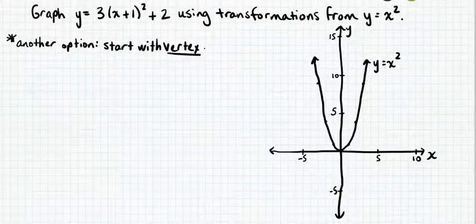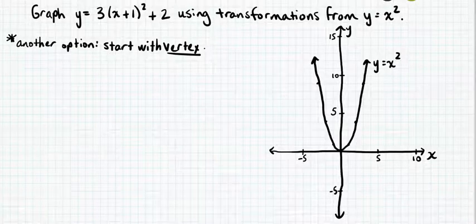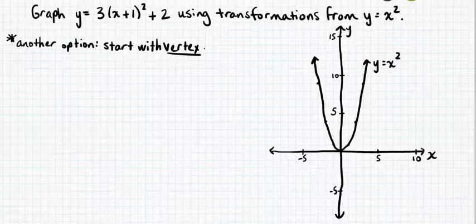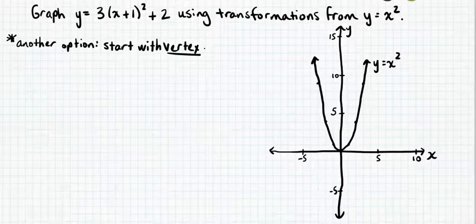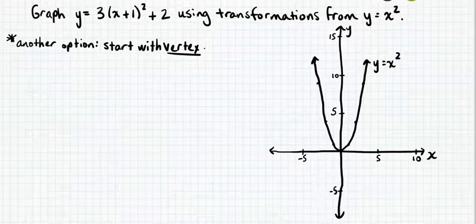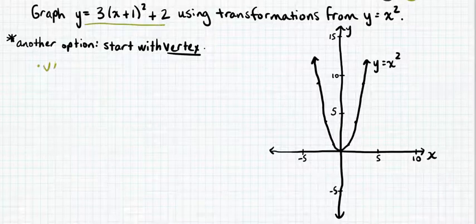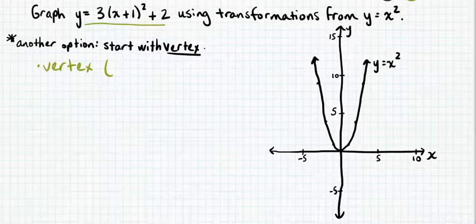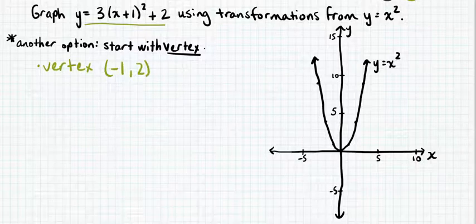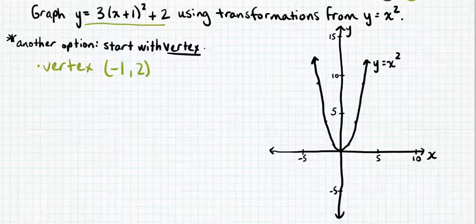We're going to do one more example, using a slightly different option for graphing parabolas from vertex form. In this option, we start by plotting the vertex of the transformed graph, then apply the stretch, compression, or reflection factor. From the equation, we can see the vertex is at (−1, 2) — that's h comma k, where h is negative 1 and k is positive 2. So we plot the new vertex at (−1, 2).